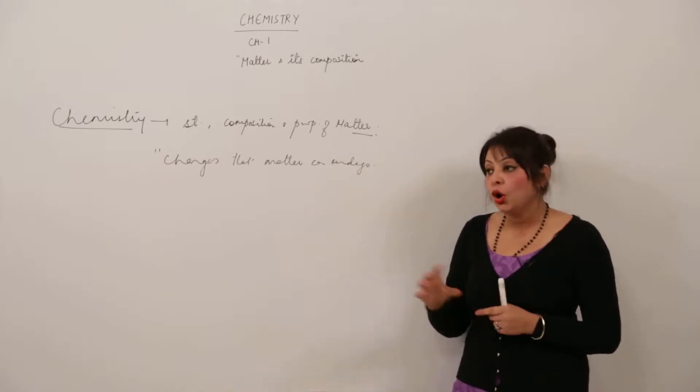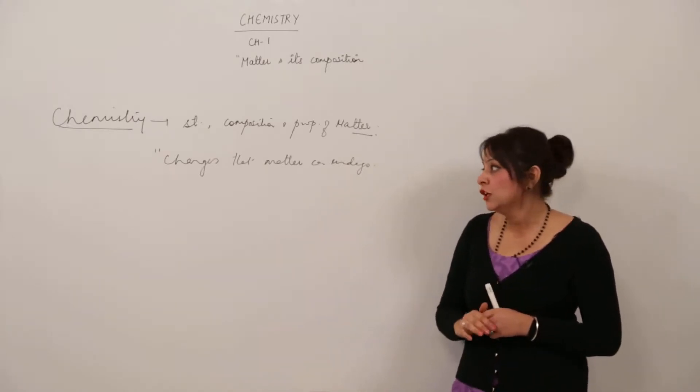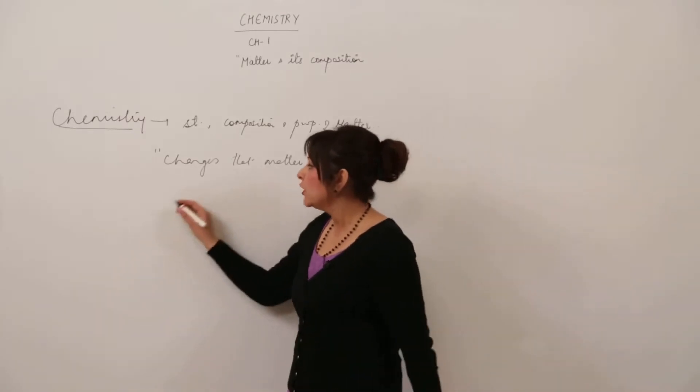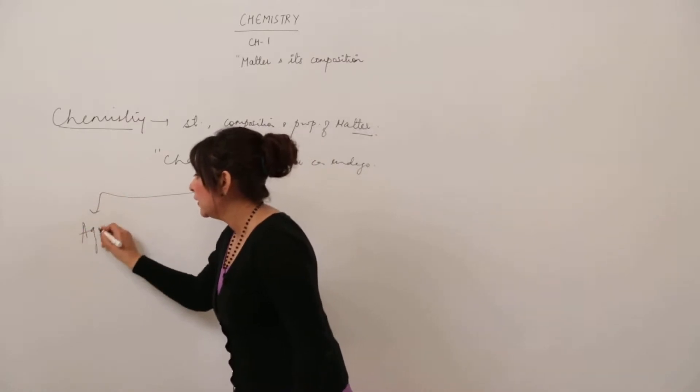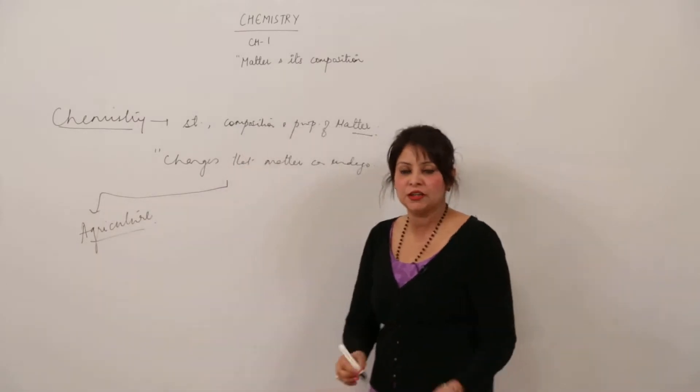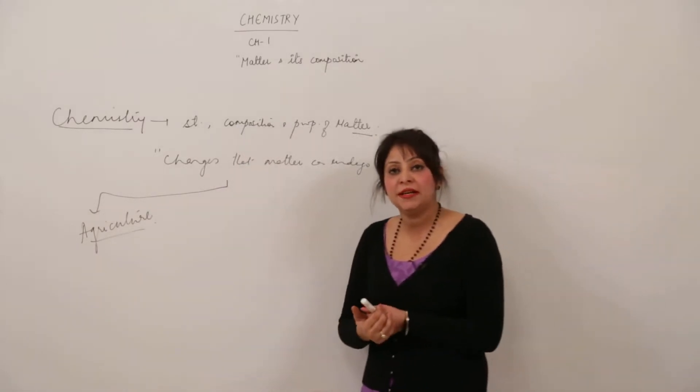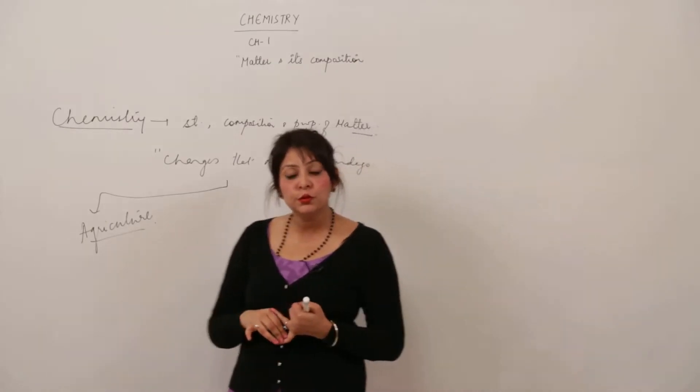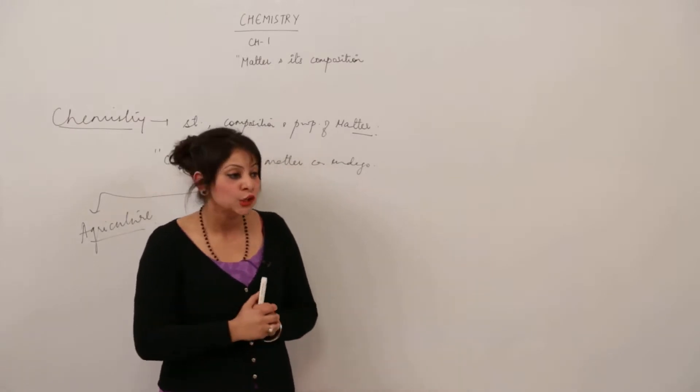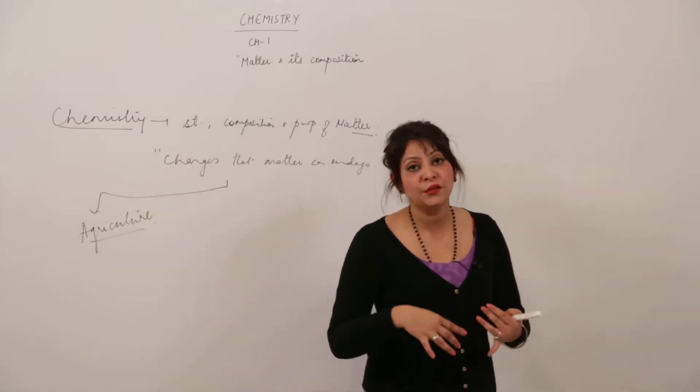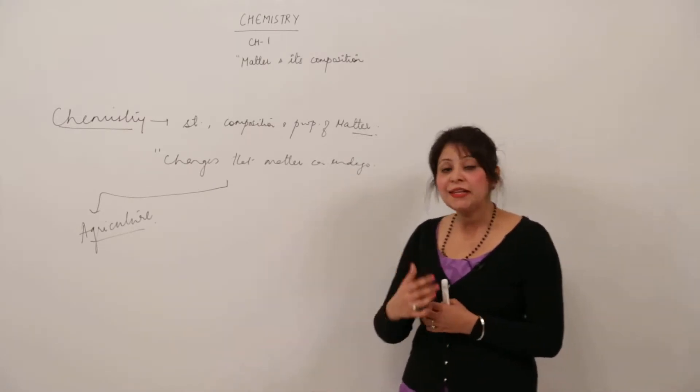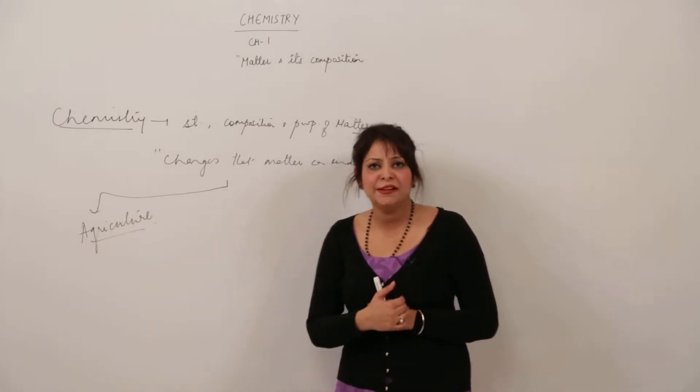Chemistry plays a very vital role in daily routine, in almost every field. Let us discuss the scope of chemistry in life. It deals with agriculture. Population is increasing day by day, and the demand for food variety and quality has undergone change. We need to increase production, and chemistry plays an important role here.